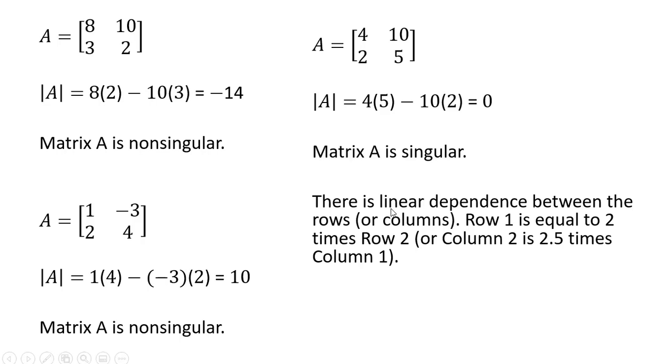You'll notice there is linear dependence between the rows or columns. Row 1, this 4 and 10, is equal to 2 times row 2. Or you could think of column 2, this 10 and 5, equaling 2.5 times column 1. So we have linear dependence, and in this case, we have a singular matrix.